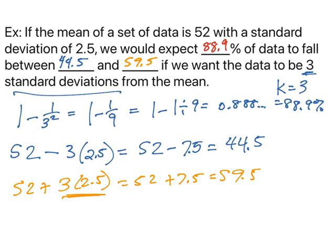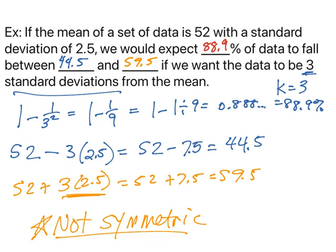So I can now say if the mean of a set of data is 52 with a standard deviation of 2.5, we would expect 88.9% of data to fall between 44.5 and 59.5 if we want the data to be three standard deviations from the mean. I should note that this is if we have a not symmetric data set, because if it is symmetric then we would use the normal distribution. But here we're using Chebyshev's theorem, which means we are dealing with a not symmetric piece of data.